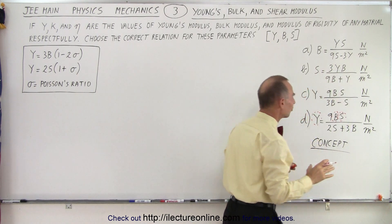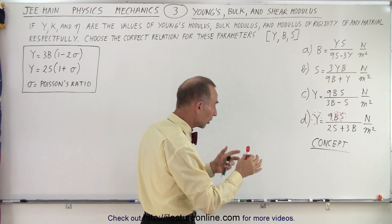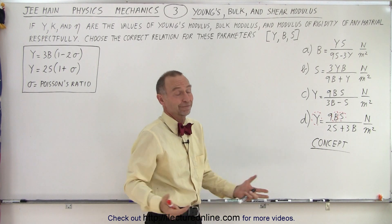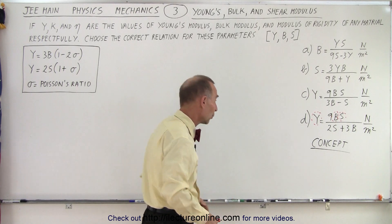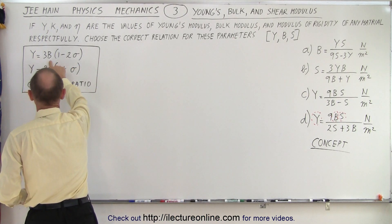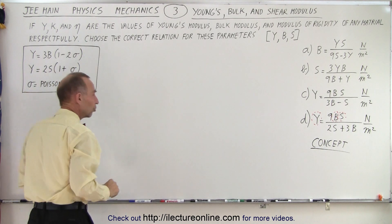Notice that every one of the four equations include all three of these indices for Young's, bulk, and shear modulus, and so somehow, you have to be able to relate them to one another. So that means you need some sort of equation. And here are the two equations that relate the Young's modulus to the bulk modulus, and the Young's modulus to the shear modulus, with Poisson's ratio in there.